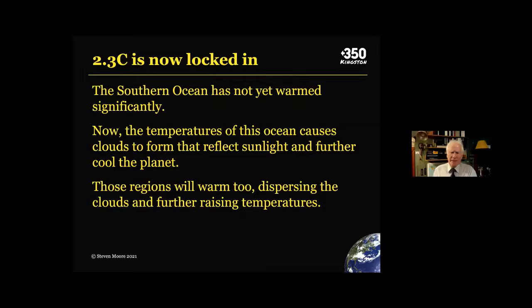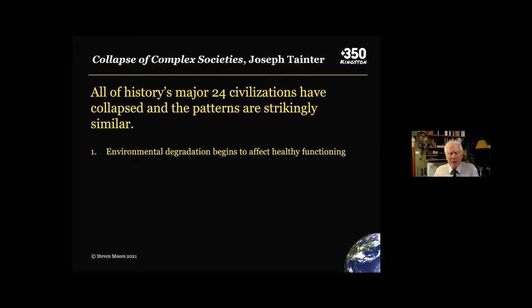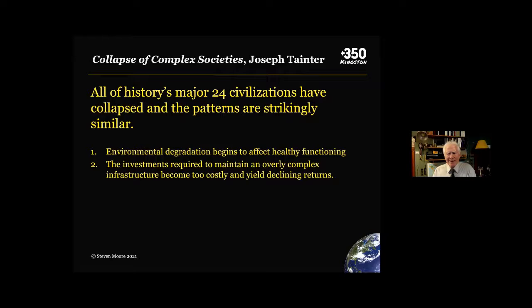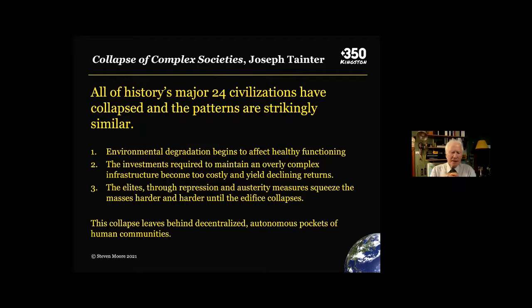I'm always reminded of a book called The Collapse of Complex Societies by Joseph Tainter, where he says that every one of humanity's major 24 civilizations have collapsed, and the patterns are strikingly similar. Environmental degradation begins to affect healthy functioning. Investments required to maintain an overly complex infrastructure are too costly. And the elites, through repression and austerity, squeeze the masses harder until the edifice collapses. This collapse often leaves behind decentralized, autonomous pockets of human communities.